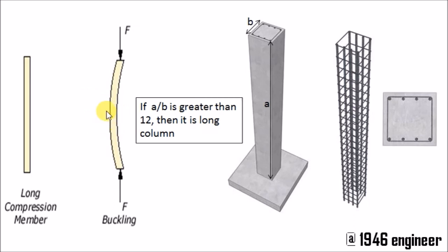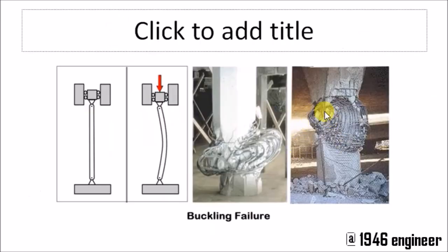So lateral ties help in preventing buckling action of the column, and this is how the column fails due to buckling. So the two main reasons are: one, it holds the reinforcement in its place, and it prevents the buckling in the column.